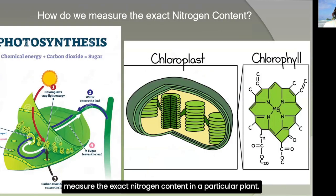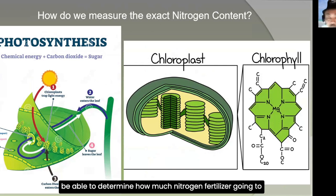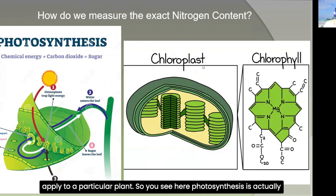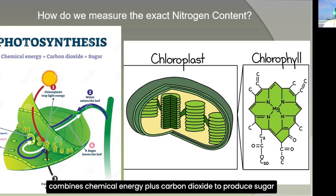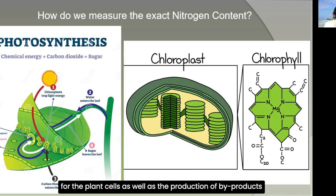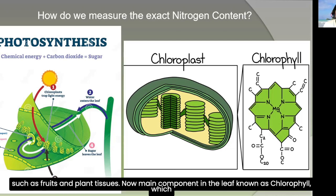How do we measure the exact nitrogen content in a particular plant? If we could measure it exactly, we'd be able to determine how much nitrogen fertilizer to apply. Photosynthesis is the process of creating food — particularly sugar — combining chemical energy and carbon dioxide to produce sugar used for the plant's energy and byproducts such as fruits and plant tissues.